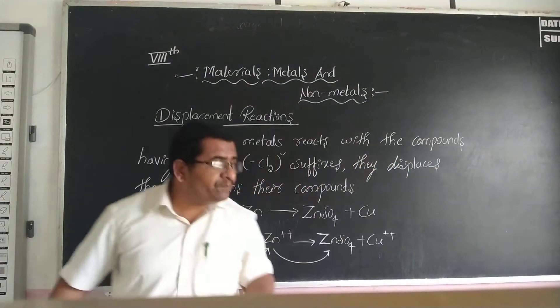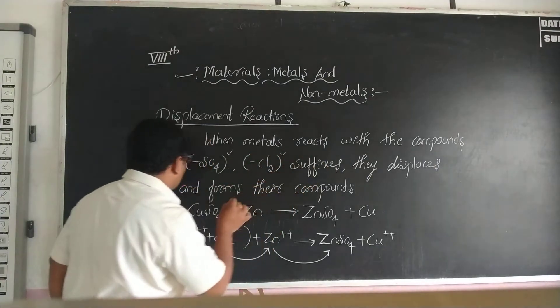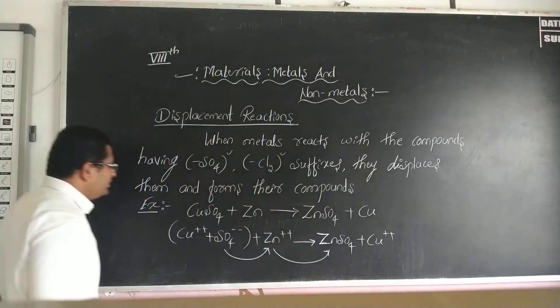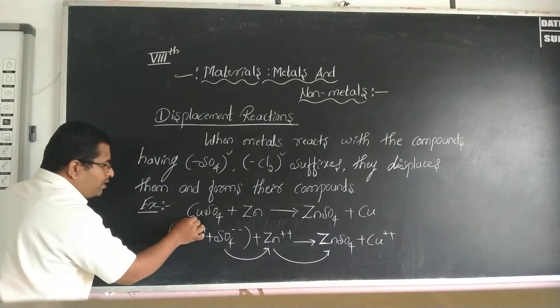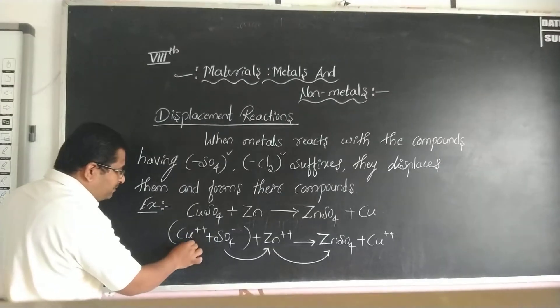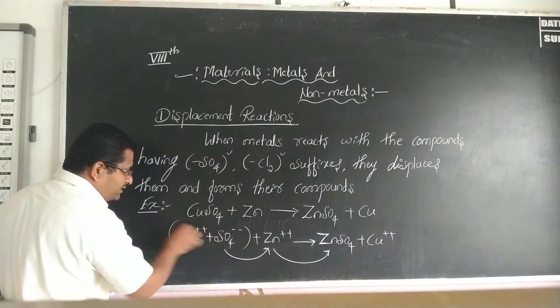When metals react with compounds having sulfate and chloride suffixes, they displace them and form their compounds. For example, copper sulfate CuSO4 splits into Cu²⁺ and SO4²⁻ ions.